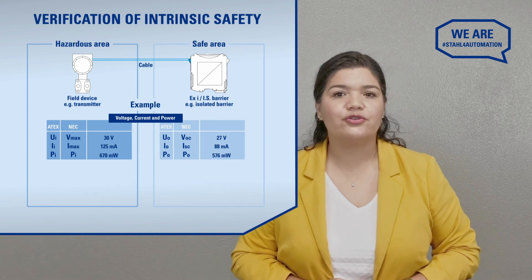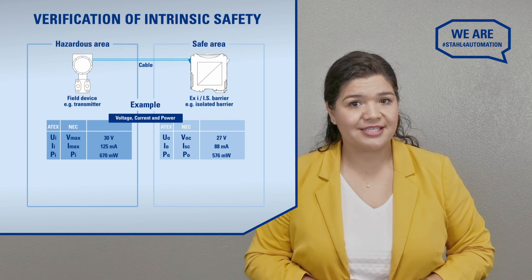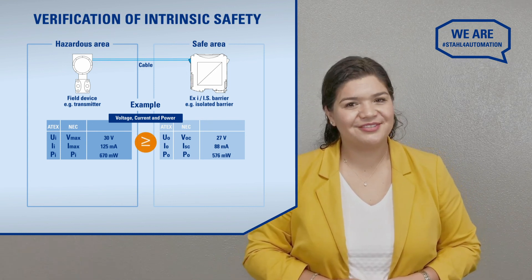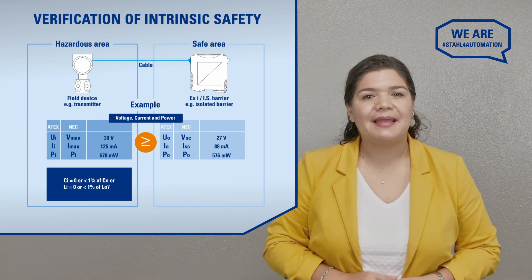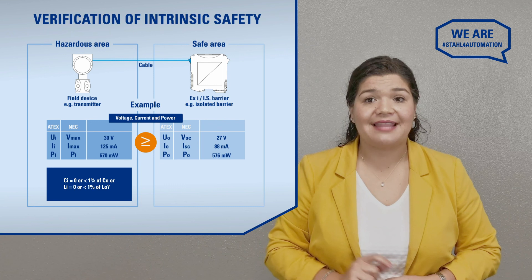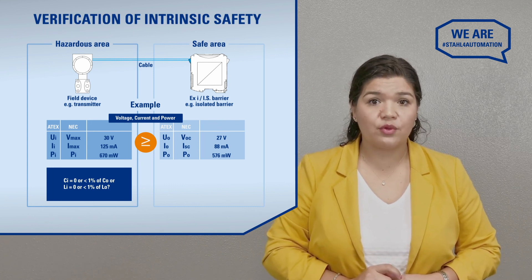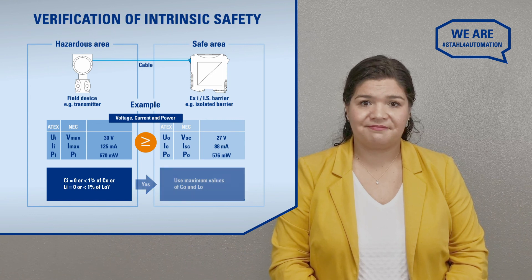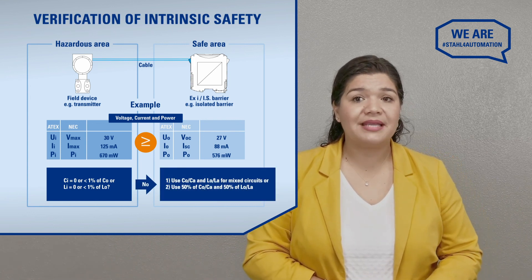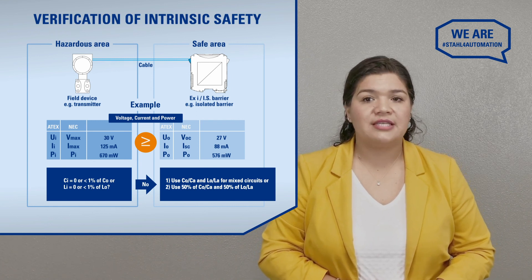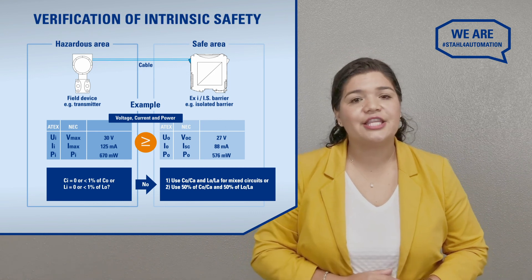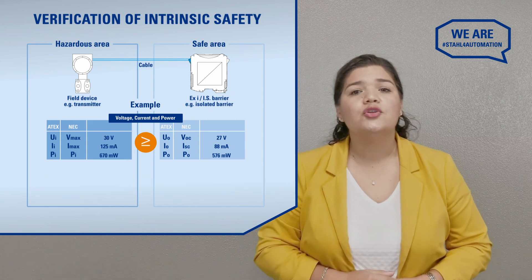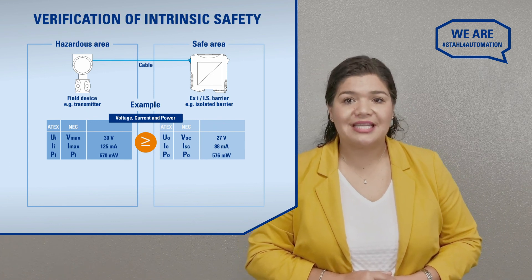Let's run an example. You'll find the energy parameters in the operating manuals or control drawings. First, we'll check whether the field device values are really less than or equal to those at the barrier — it's looking good so far. Energy storage can be a bit more tricky. If inductance and capacitance at the field device are zero or less than 1% of those at the barrier, you can use the maximum inductance and capacitance values of your barrier for these calculations. In any other case, you will have to use the values for mixed or concentrated inductance and capacitance, which you will find in the documentation or control drawing of the barrier. Alternatively, use 50% of the barrier's maximum values in the calculations.